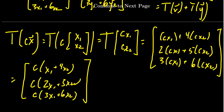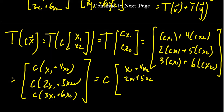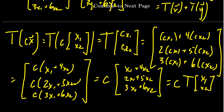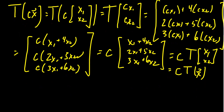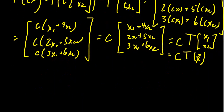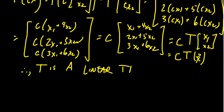Since everything in all three entries is divisible by C, we can factor it out entirely, leaving C times the vector X1 plus 4X2, 2X1 plus 5X2, and 3X1 plus 6X2. This vector is just T of X1, X2, so the whole expression is just C times T of X. Therefore, T is a linear transformation — we've shown that it preserves both addition and scalar multiplication.